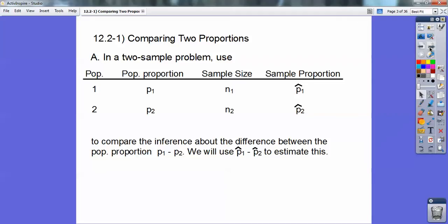That's going to compare the inference, which is the study about the differences between the population proportions, the first one minus the second one. And we're going to use the sample proportions of the first one minus the second one to estimate all of this.